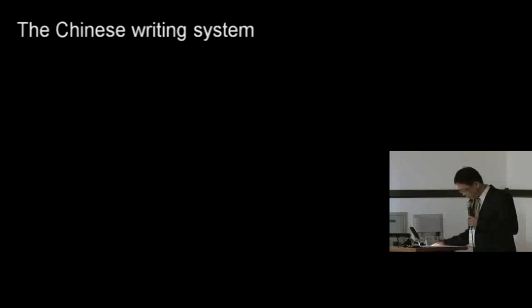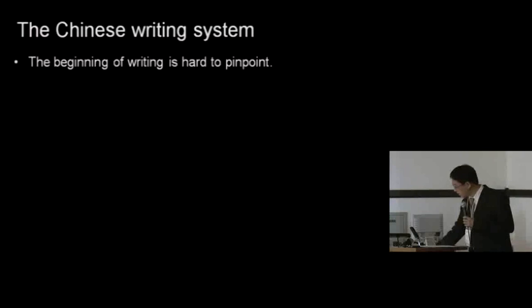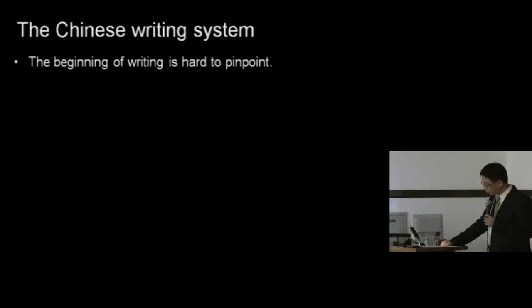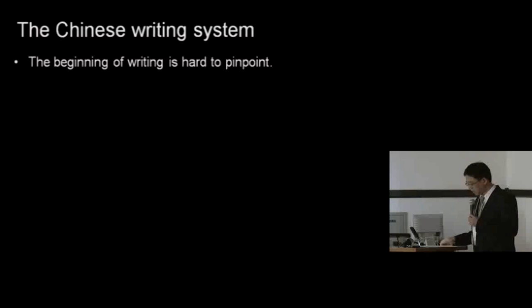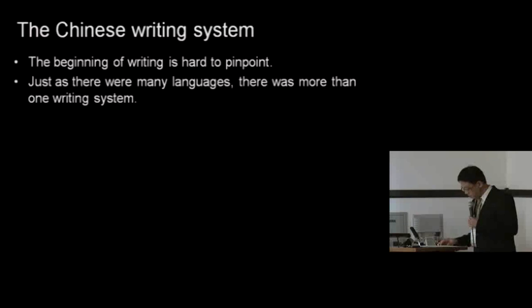Turning to the writing representation of the spoken language, the beginning of the writing system is hard to pinpoint. Although there is evidence of what we can refer to as pre-writing or precursors of writing, the relation of these to actual writing is unclear. The fragmentary marks and symbols on pottery and other materials may or may not have been steps that ultimately led to the invention of writing. What we do know is that just as there were many different languages in China during this period, there was also more than one writing system.